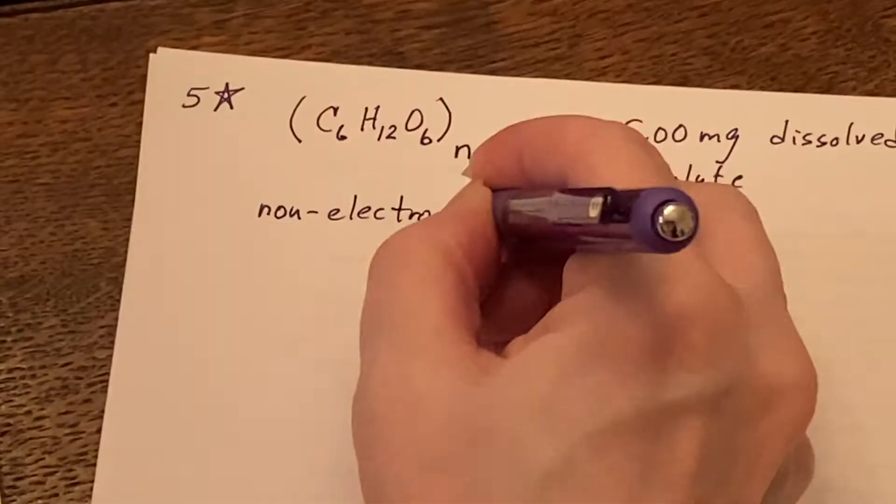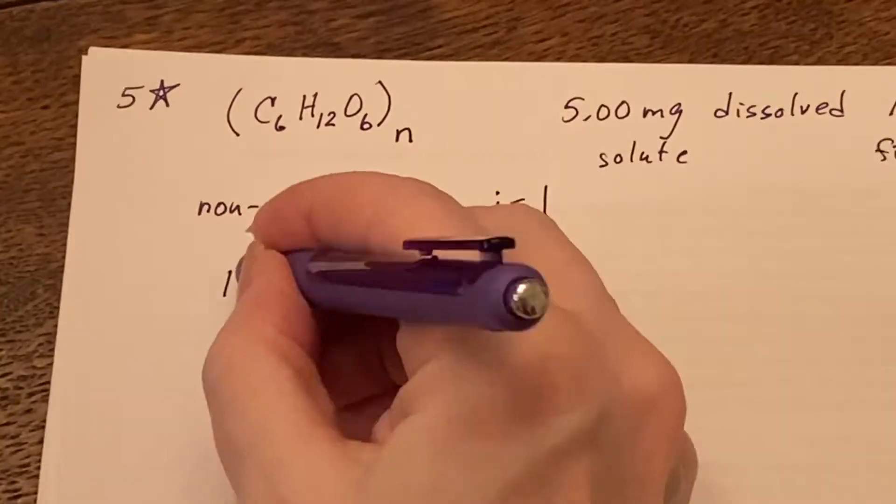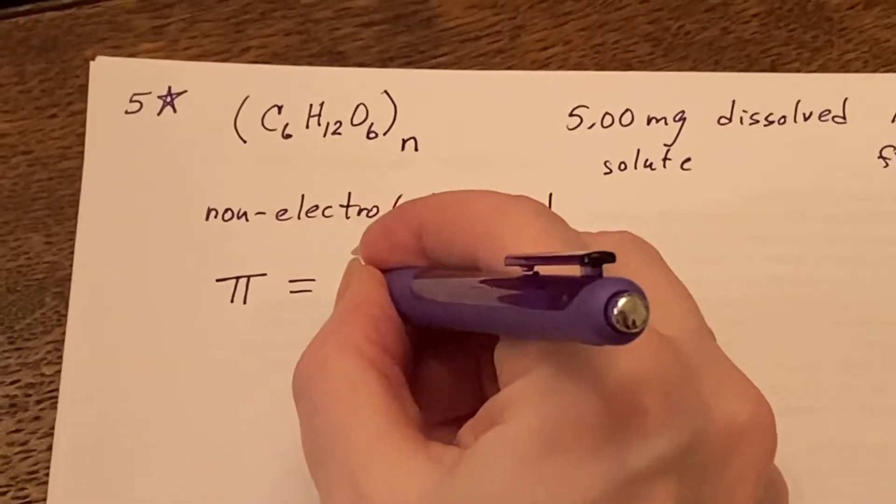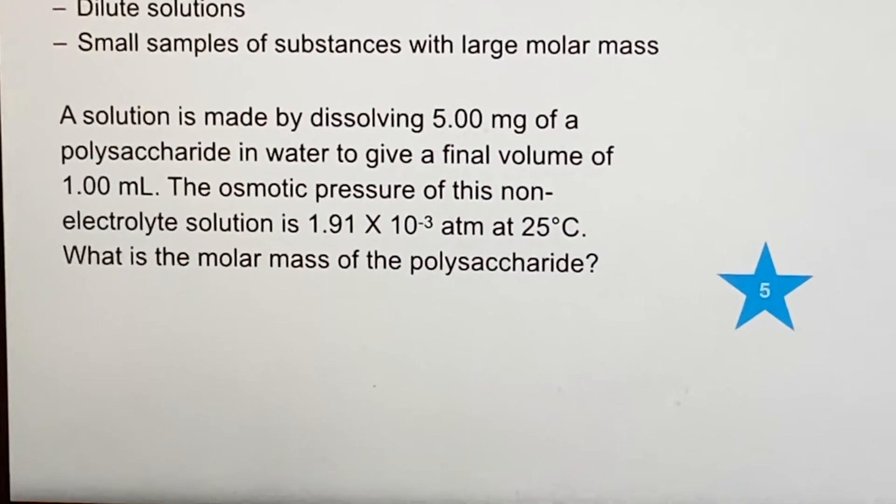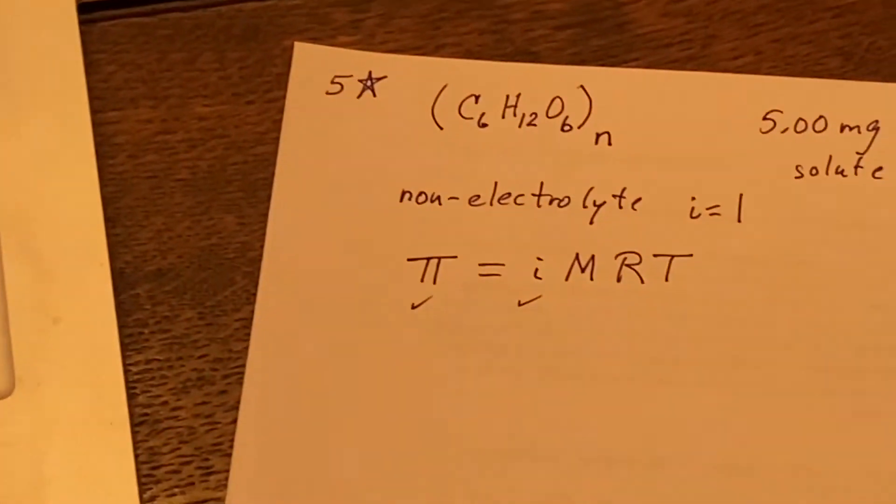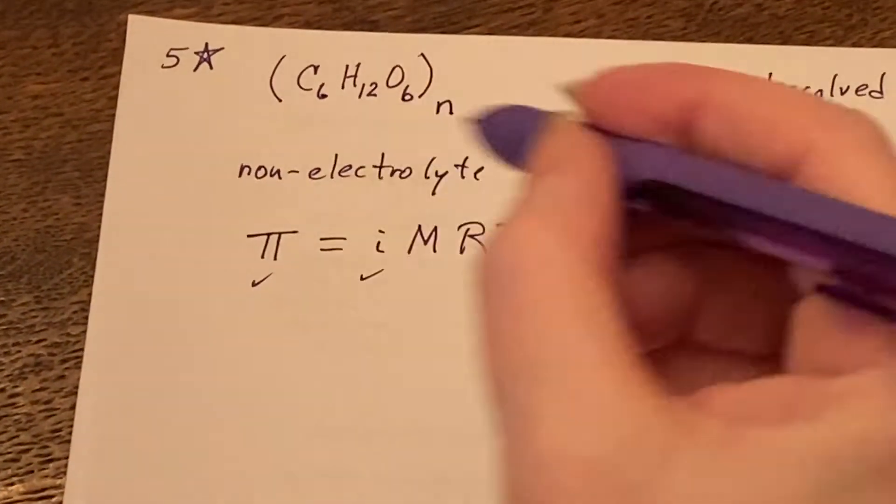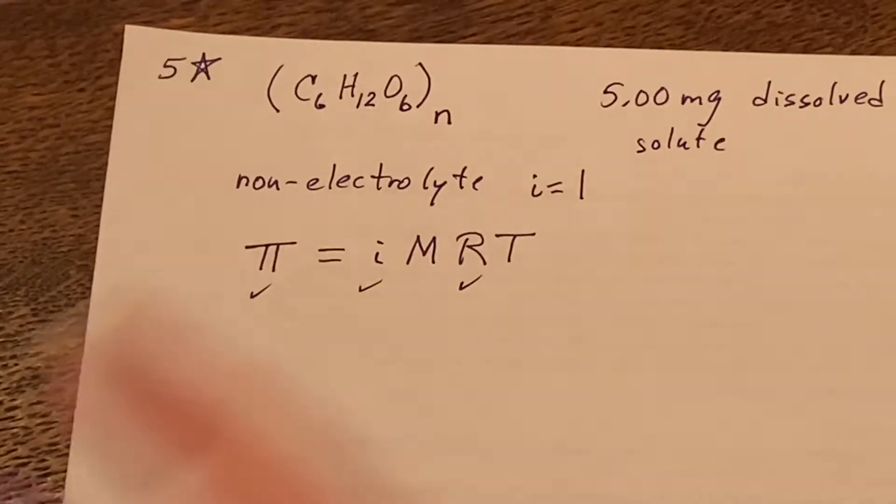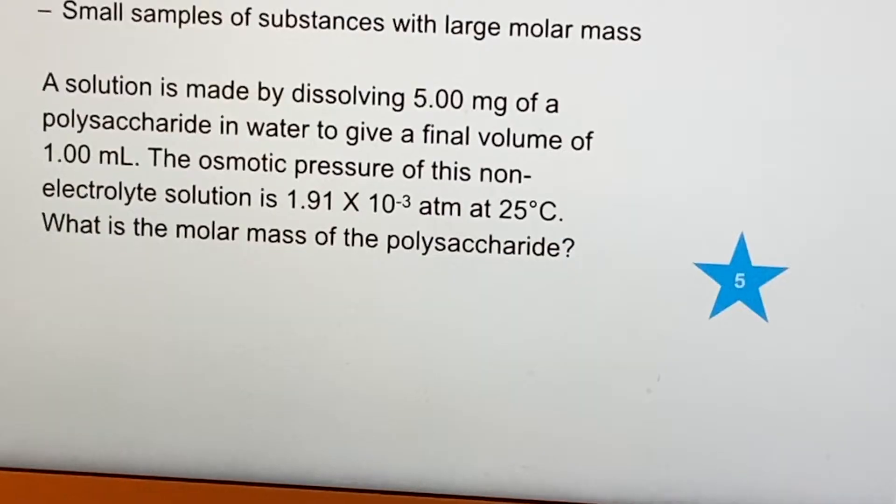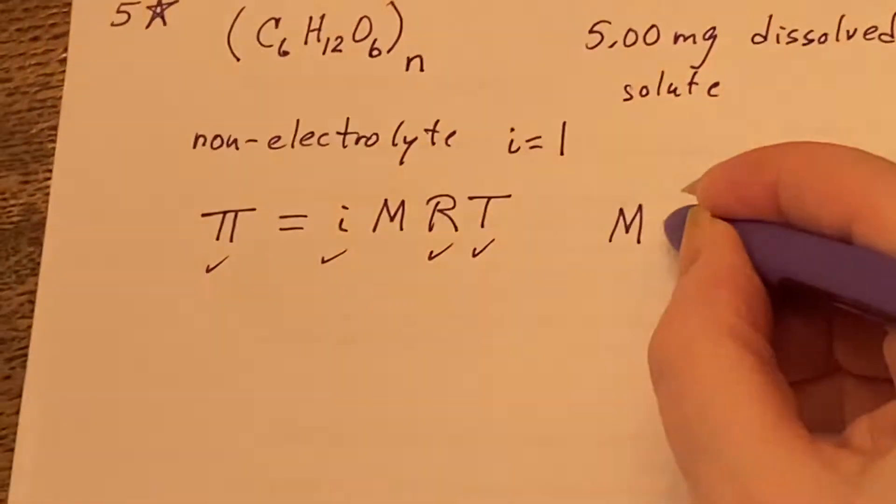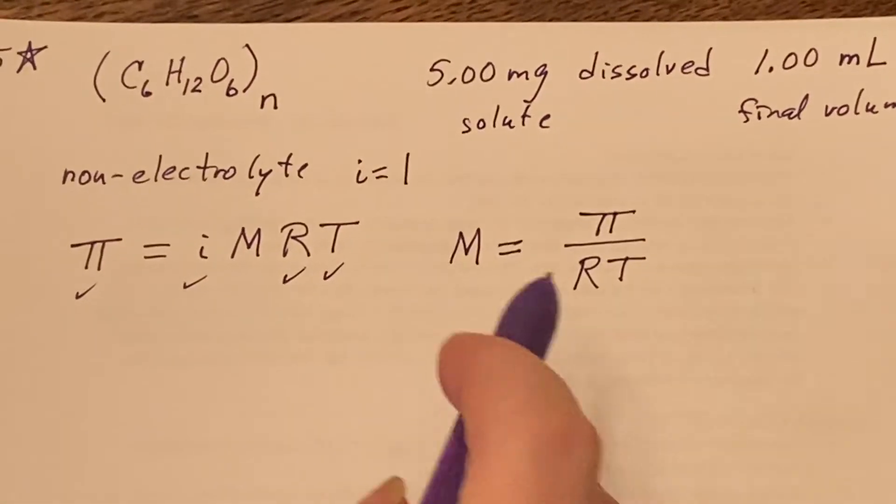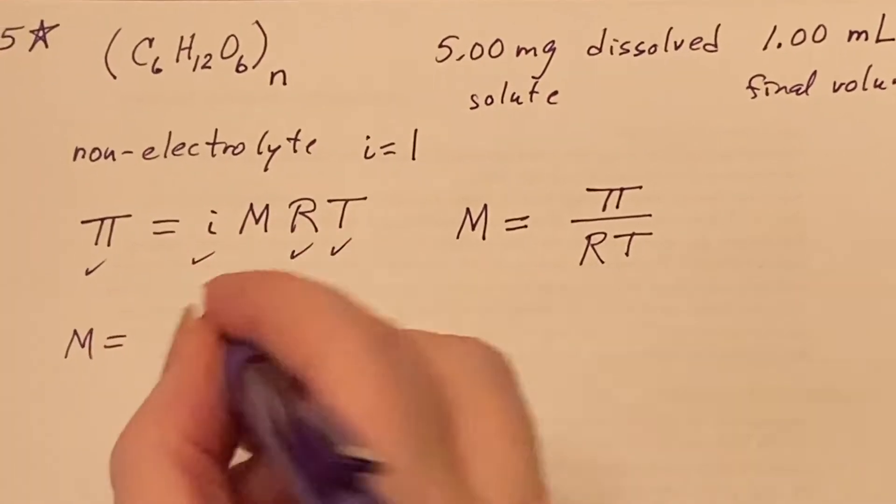But what do I know? I know from here it says the osmotic pressure of this non-electrolyte solution - guess what they just told us when they said that? If they said non-electrolyte, that means I know that i is 1. So my π = iMRT. They've given me the pressure, so they gave me this. They told me it was a non-electrolyte, so I know that i is 1. R is a gas constant, and they told me a temperature. They gave me everything but M. So I can rearrange this formula to isolate M.